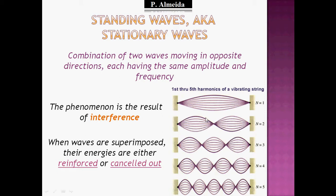Just before going to the next slide, I'm going to explain how you decide which harmonic you have. This is a vibrating string and here they call it the first to the fifth harmonic. The number of harmonics is determined by the number of these higher amplitude points.